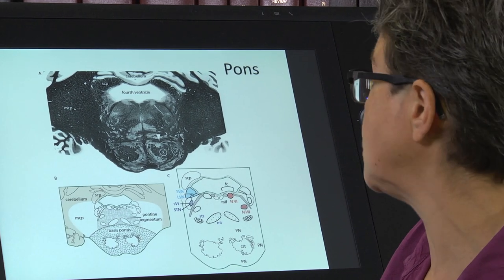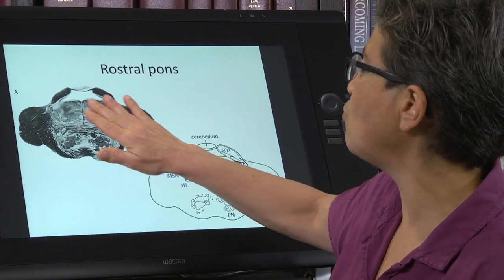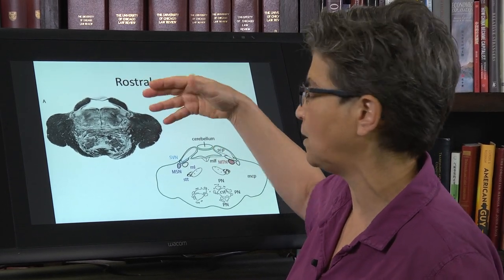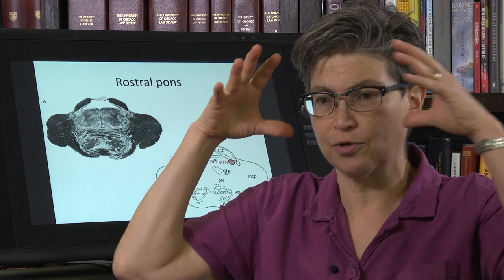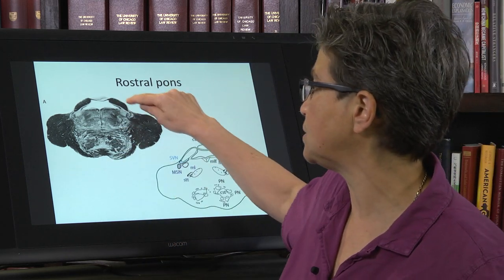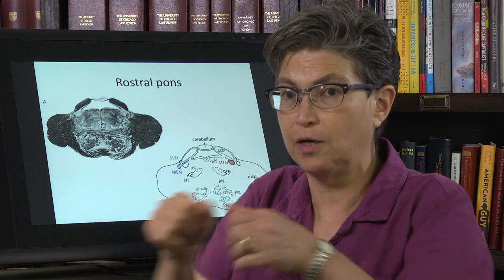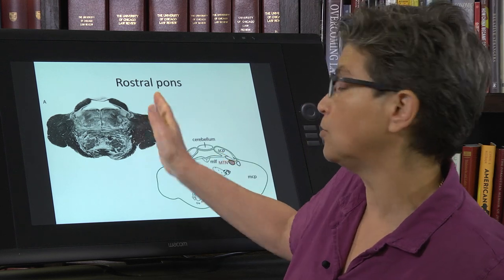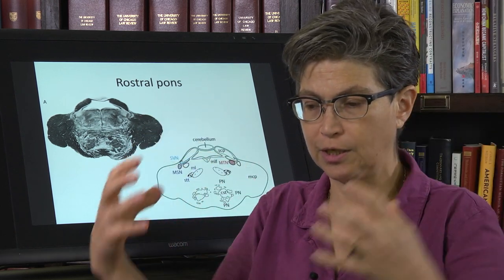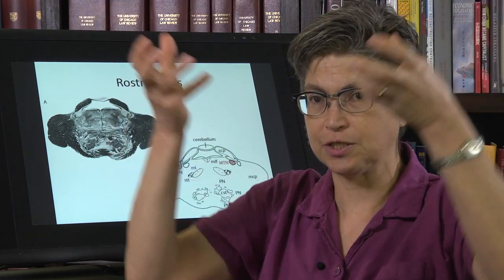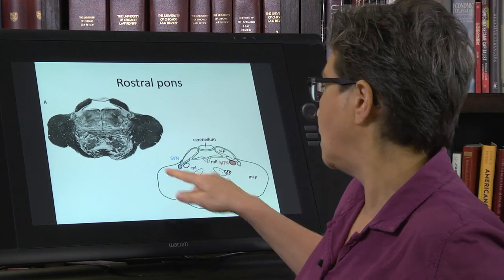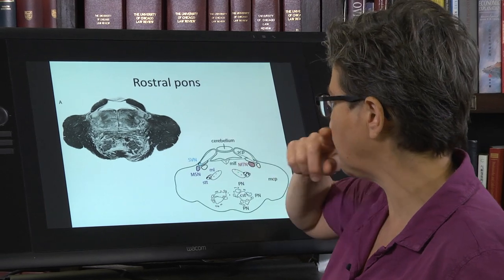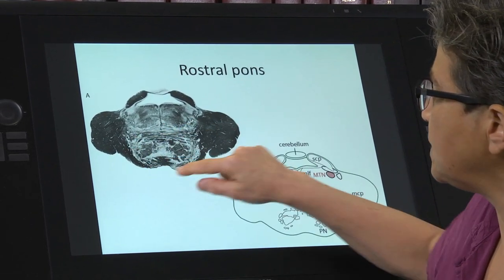Now we're going to rostral pons. We've lost the attachment of the cerebellum but we still have the peduncles. This is the superior cerebellar peduncle coming out from the cerebellum going towards the midbrain. Here's the middle cerebellar peduncle — such a huge structure that it attaches the cerebellum to the bulbous basis pontis. So: superior cerebellar peduncle, middle cerebellar peduncle, and we still have the basis pontis.